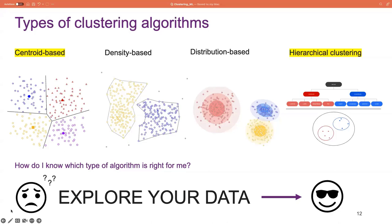We also have distribution-based clustering. Centroid-based clustering is based on proximity — some measure of distance — and density-based clustering is based on density, whereas distribution-based clustering takes probability into consideration. Data points are grouped based on their likelihood of belonging to the same probability distribution, such as Gaussian or binomial. The advantage these algorithms have over centroid-based algorithms is their ability to model diversely-sized clusters — we've got three clusters of different sizes in the picture. But the downside is these algorithms tend to only work well with synthetic data or data points that belong to a predefined distribution.